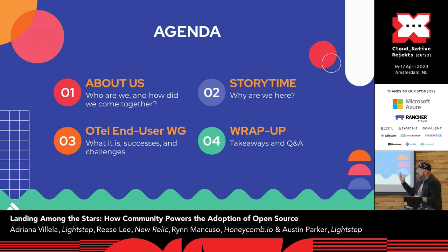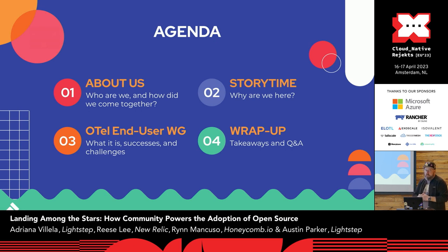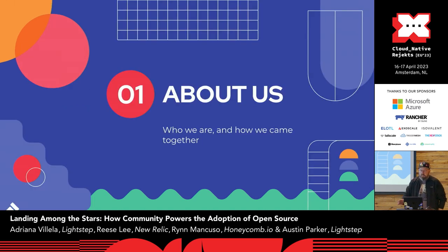This is a pretty freeform discussion. We're going to start by introducing everyone and talking about who we are and how we came to this project. Then we're going to tell you about one specific case study of a thing that we made called the end user working group. And then we have some takeaways for you at the end, which if you are a maintainer of an open source project, may be very useful to you.